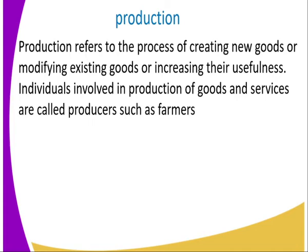Now let us look at production. Production refers to the process of creating new goods or modifying the existing ones and making them useful. For example, when a farmer is producing crops, they are doing the activity of planting a seed and harvesting.